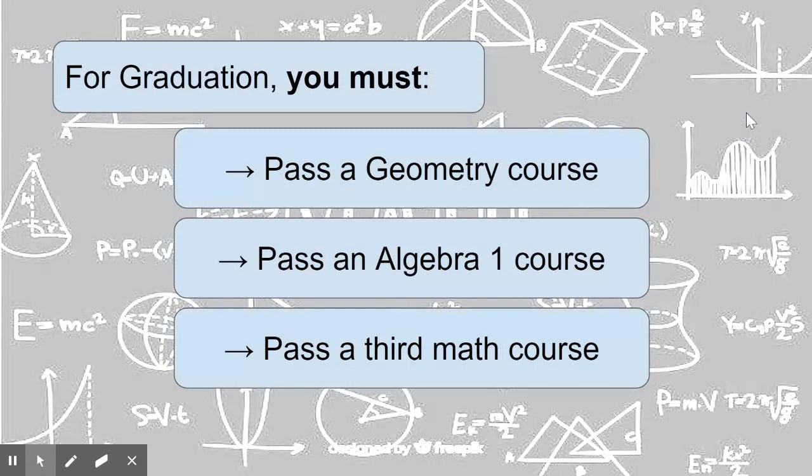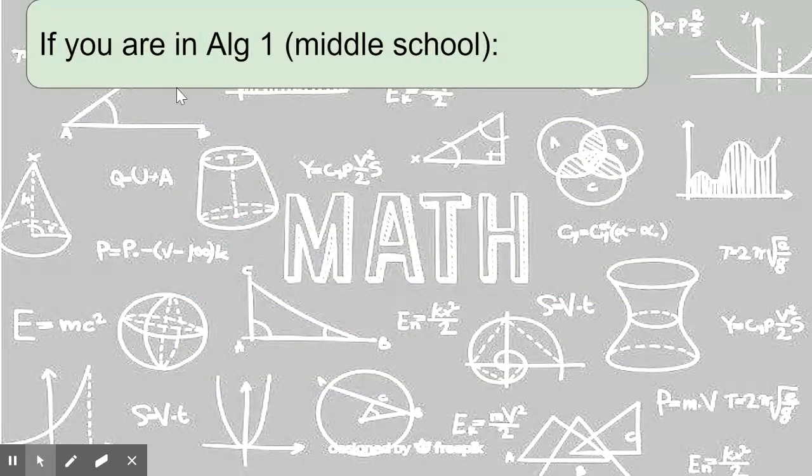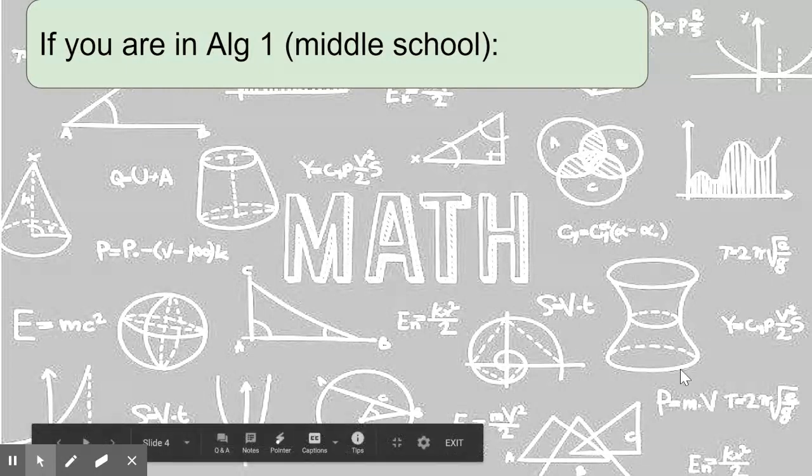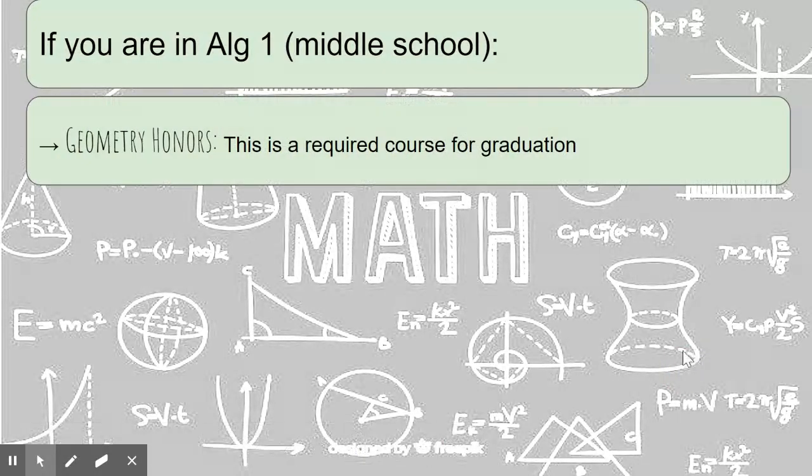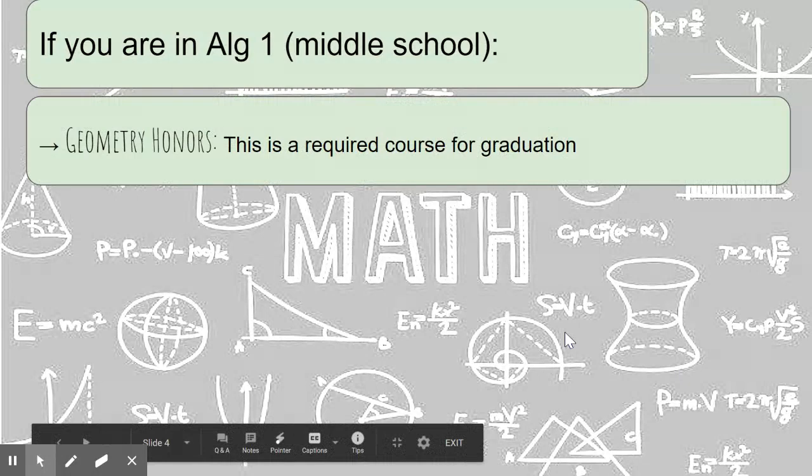We all know that if you're taking Algebra 1, you're on to bigger and better things moving forward. Your decision for this coming year is really simple. If you're taking Algebra 1 in middle school, you are going to sign up for Honors Geometry as a 9th grader. This is a required course for graduation.